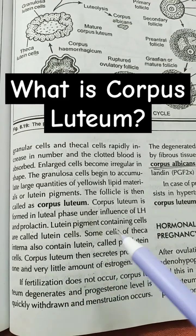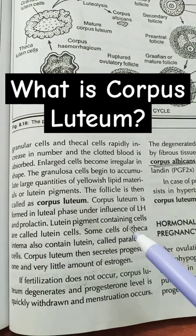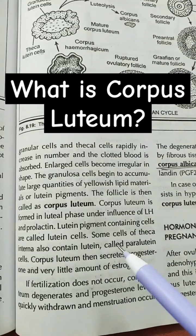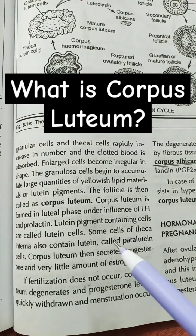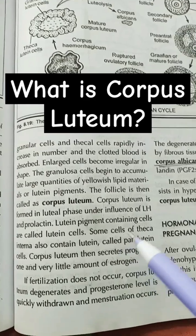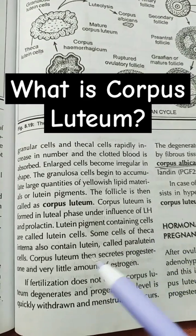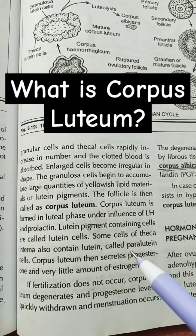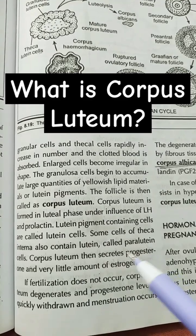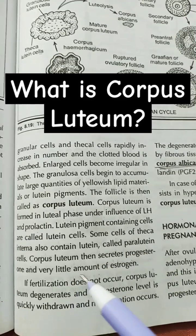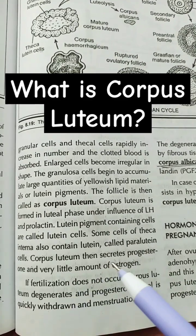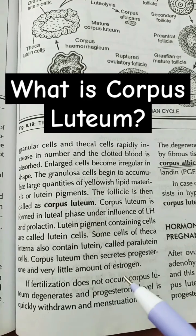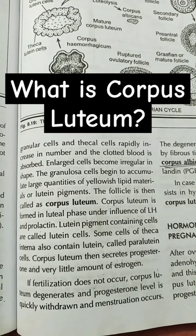Lutein pigment-containing cells are called lutein cells. Some cells of the theca interna also contain lutein, called paralutein cells. Corpus luteum then secretes progesterone and a very little amount of estrogen.